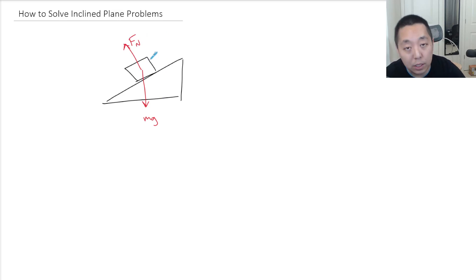Now what we normally do is if the block is sliding up and down the ramp, we want to set the axes so that this is the x direction and then perpendicular to the plane is the y direction. The reason you usually want to do that is it's useful to set the axes so that the acceleration is in one direction.